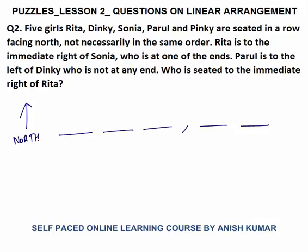Rita is to the immediate right of Sonia. You don't have to write the full name, just write the first letter if they are all different. Rita is to the immediate right of Sonia, who is at one of the ends. Sonia cannot be at the right end because then there would be no position for Rita to her right. So Sonia sits at the left end and Rita is immediately to her right.